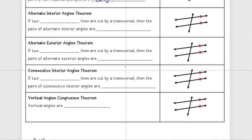The Alternate Interior Angles Theorem says if two parallel lines are cut by a transversal, then the pairs of alternate interior angles are congruent. So that would mean this angle is congruent with that angle, and this angle is congruent with this angle — they're equal in measure.